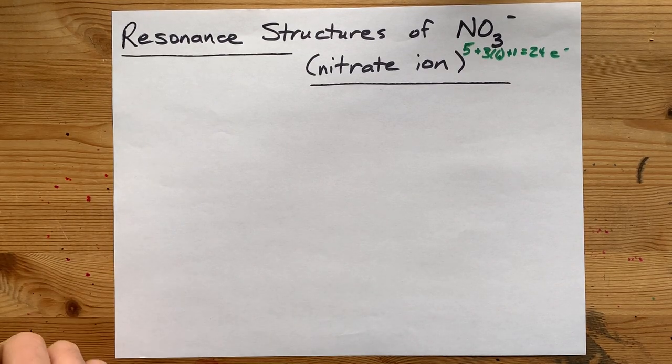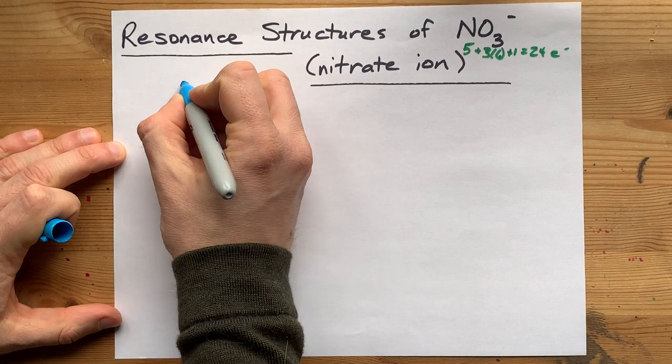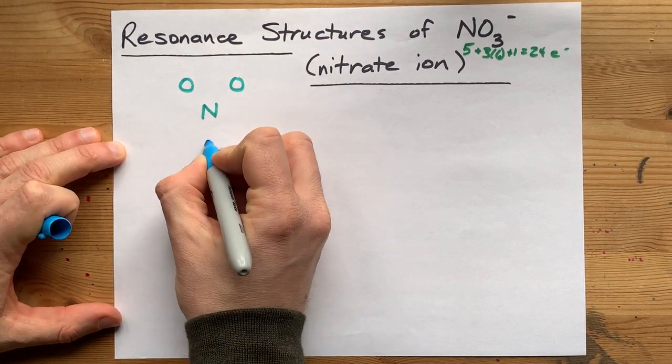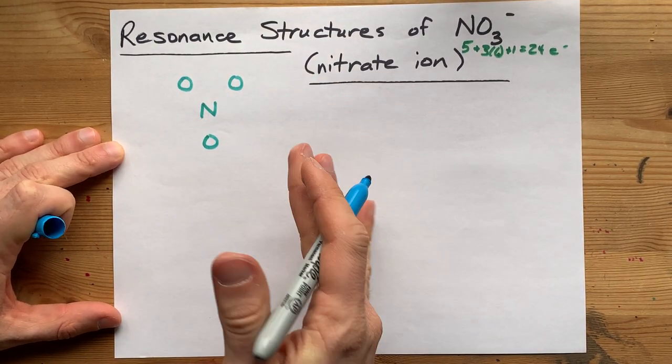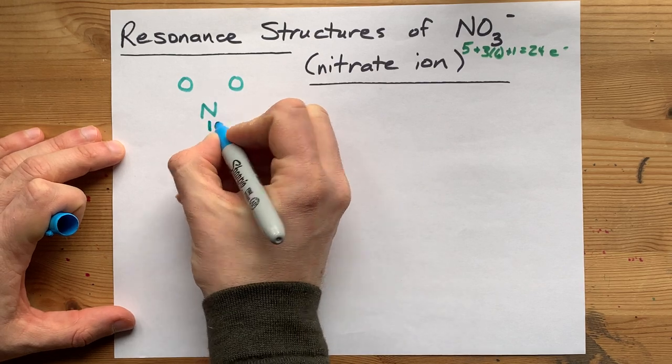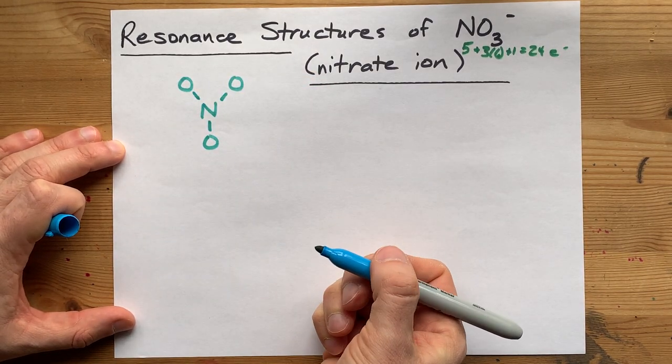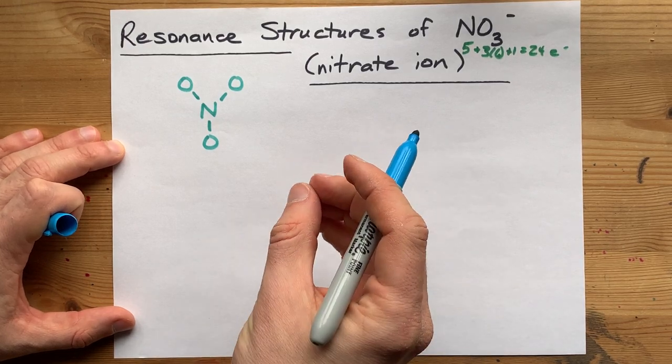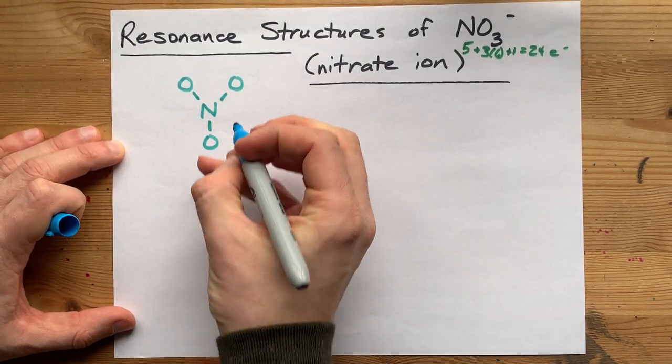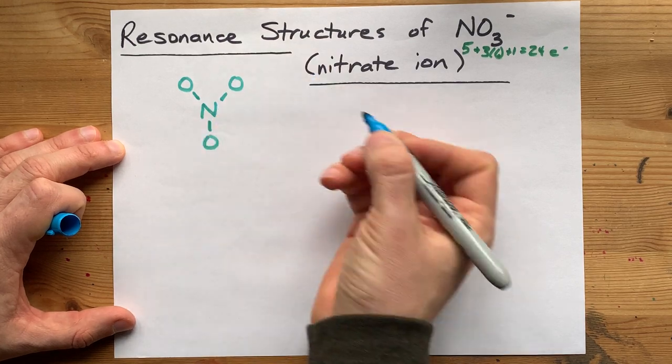Now what I'm going to do here is draw myself the N in the center with the 3 O's on the outside. The way I draw Lewis structures is to start off with single bonds between all the atoms that I know are bonded, and then I complete the octet on the outer atoms, like the ones on the outside, not the center.